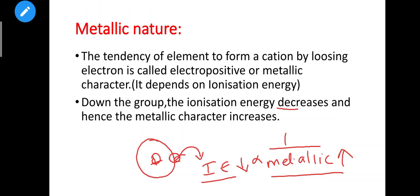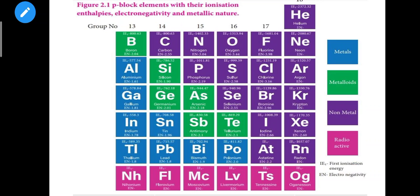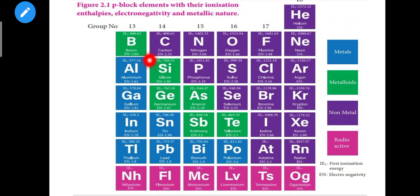Down the group, ionization energy decreases due to the increase in atomic radius. If you remove an electron and ionization energy is less, metallic nature increases — the two are inversely proportional. Looking at the periodic table: green color represents metaloids, blue color represents metals, and violet color represents non-metals. Metaloids can act as both metal and non-metal, showing partial metallic character and partial non-metallic character.